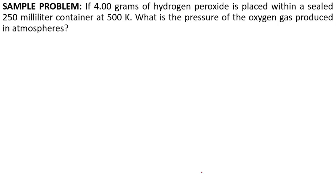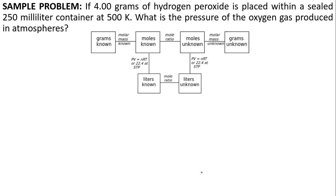So to show you, let's have a problem. If 4 grams of hydrogen peroxide is placed within a sealed 250 milliliter container at 500 Kelvin, what is the pressure of the oxygen gas produced in atmospheres? The first step in doing stoichiometry problems, gas or not, is to identify the balanced chemical reaction.